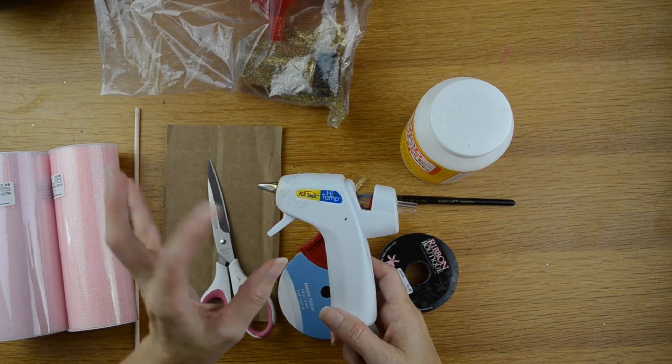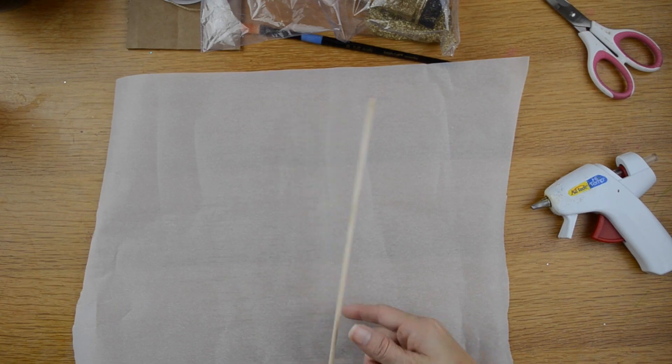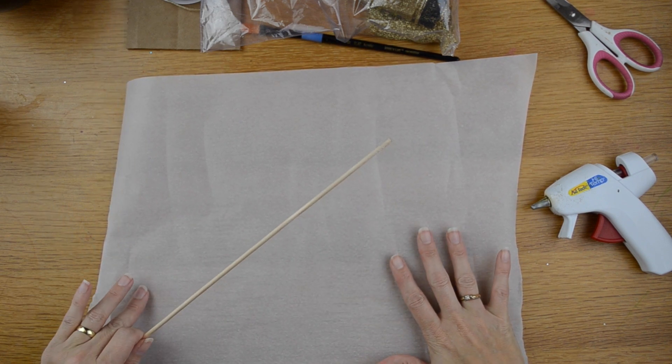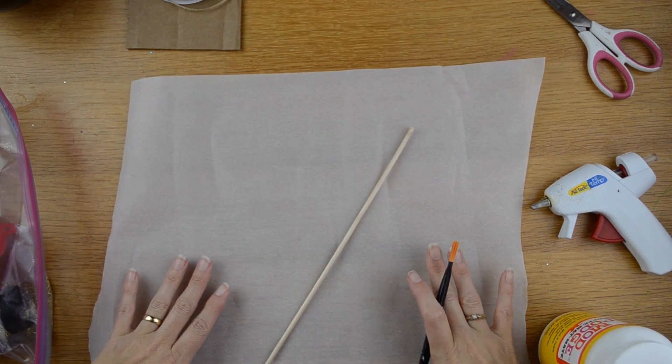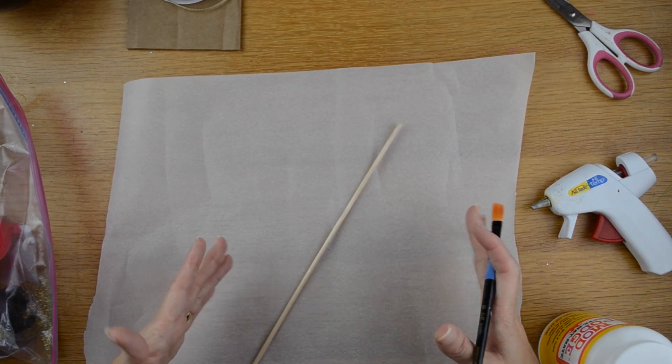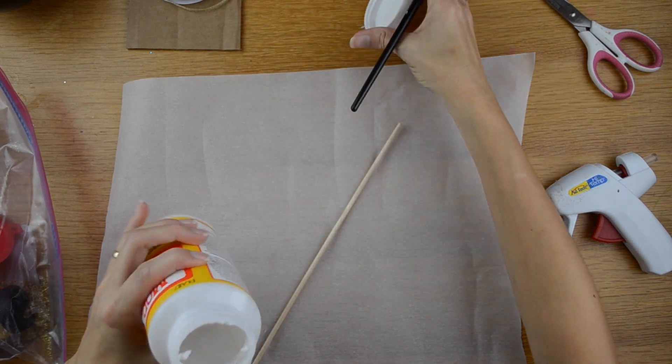You're also going to need a hot glue gun or some form of glue. So first I'm going to take my dowel rod and I am going to start putting gold glitter on it with my Mod Podge. I do have some parchment paper down here on the table to protect my work surface and also this will help with catching any of your glitter so you can save it and you can put it back in your bag.